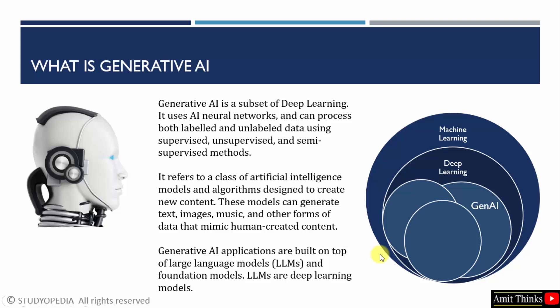Since we discussed about generative AI, I told you that it is a part of deep learning. You can see, generative AI is a subset of deep learning. It uses AI neural networks and can process both labeled and unlabeled data. That means the types of machine learning — supervised, unsupervised and semi-supervised methods.